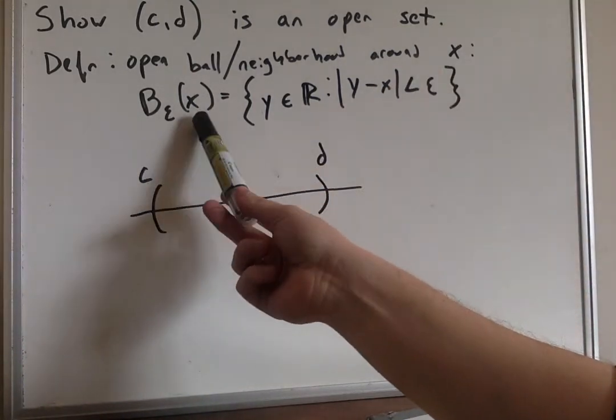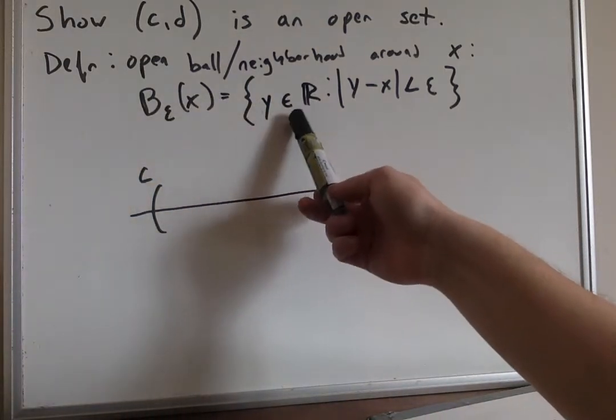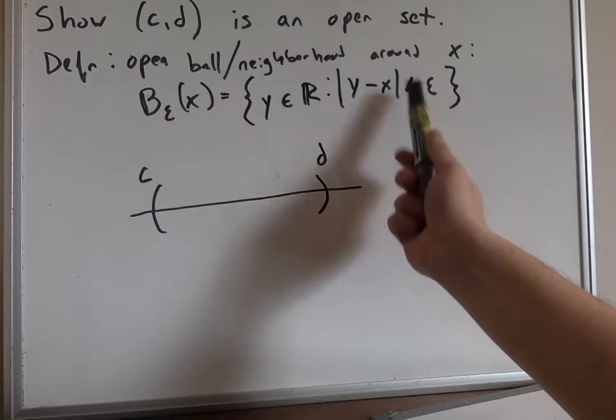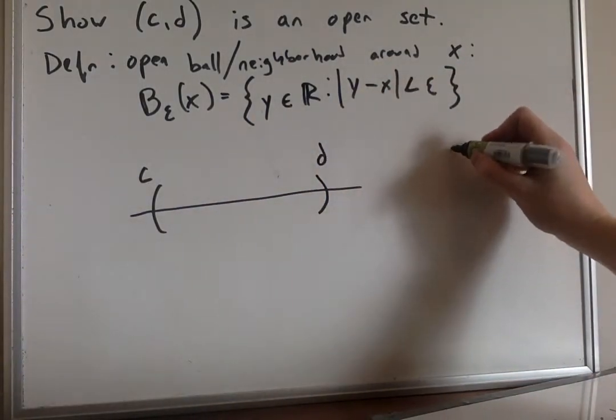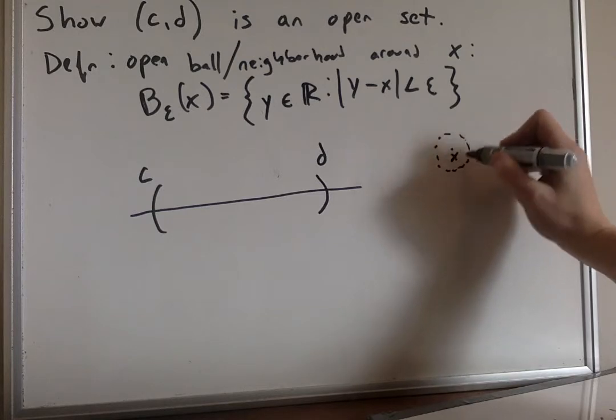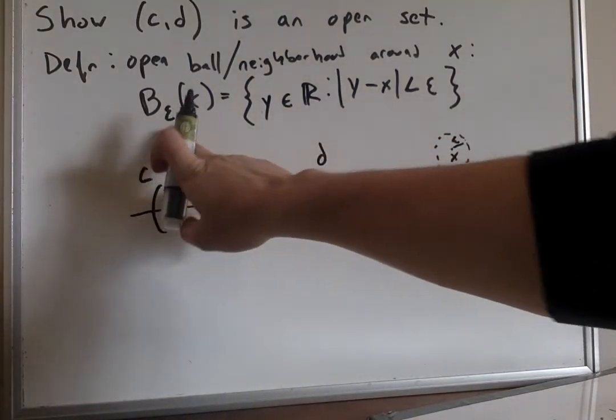So the ball around x when epsilon is given to us here is all points y in ℝ such that the distance between y and x is less than epsilon. So for any point, that's just going to be, if we have x, it's all points y that are in a little ball around an epsilon distance around x. So all these points y are going to form this ball.